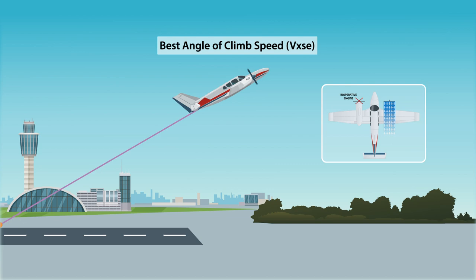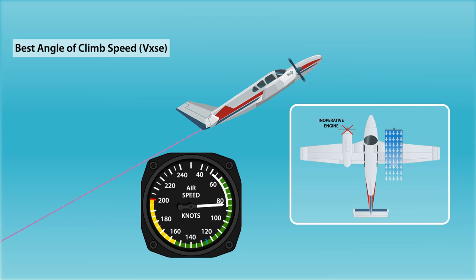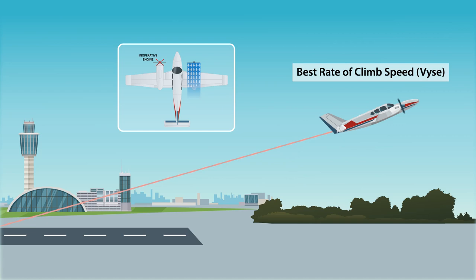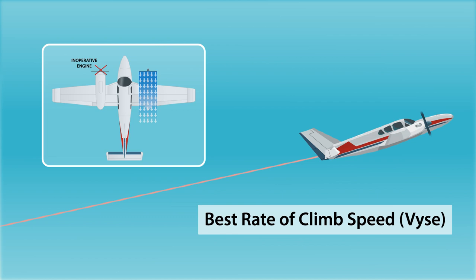VXSE is the best angle of climb speed with one engine inoperative. This is the speed at which the airplane gains the greatest altitude for a given distance of forward travel with one engine inoperative. VYSE is the best rate of climb speed with one engine inoperative. This is the speed at which the airplane gains the most altitude for a given unit of time with one engine inoperative.